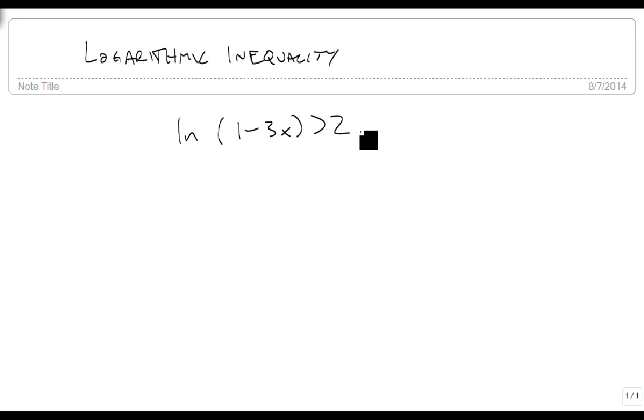When we're looking at this, there's a couple of things we need to keep in mind. The first is that we do have a domain in this problem, and we need to keep track of that domain because it's really important. We know that what's inside the parentheses, 1 minus 3x, has to be strictly greater than 0.